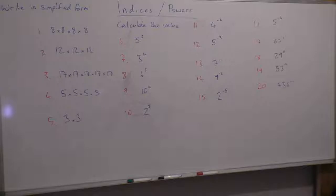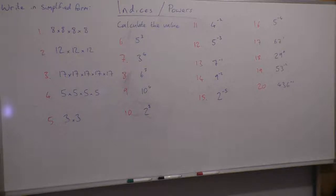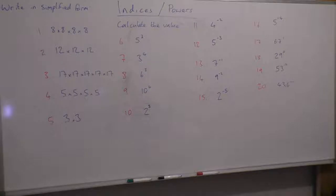Here are 20 questions for you to have a go at yourself. For the first 5, just write the number as a power. For questions 16 to 20, work out the actual value, and leave your answer as a fraction if it becomes one. Red is used for the question number and blue is the actual question. You shouldn't need a calculator for any of them, though some may require a little bit of extra work. Give it a go, see how you do, and the answers will be in my next video.